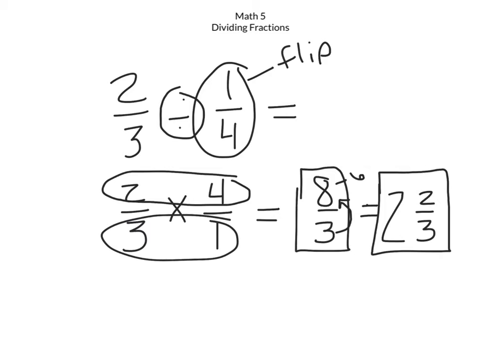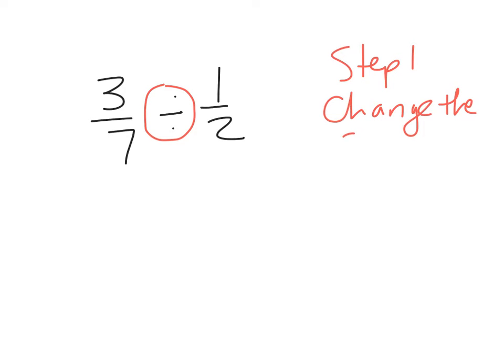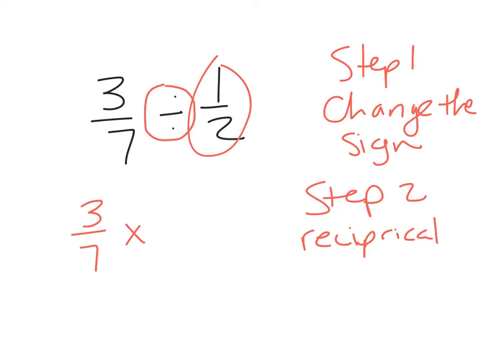Let's do another one. All right, if I have three over seven divided by one over two. Again, step one is to change the sign. I'm going to write this out. Change the sign. If you're taking notes, write this down. Change the sign. So the first fraction stays the same. You change the sign to multiplication. Step two, reciprocal of second fraction, never the first fraction.